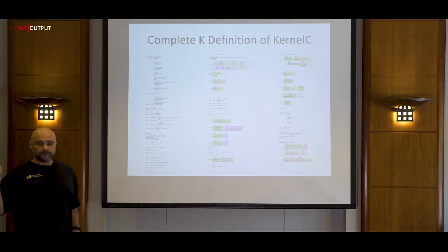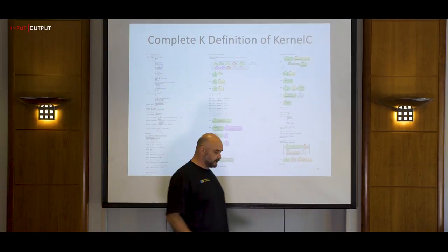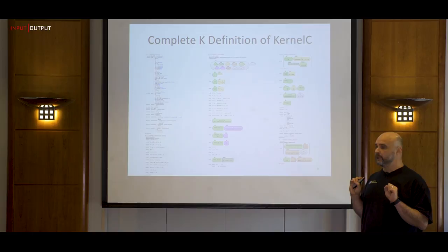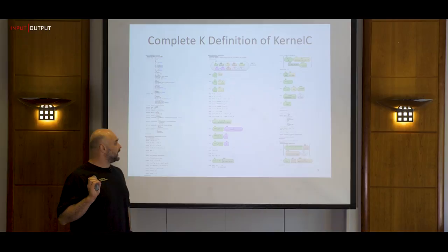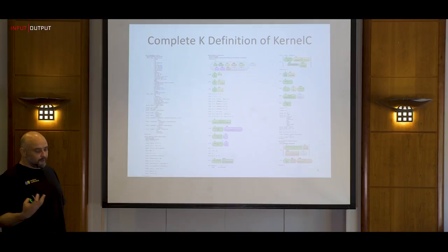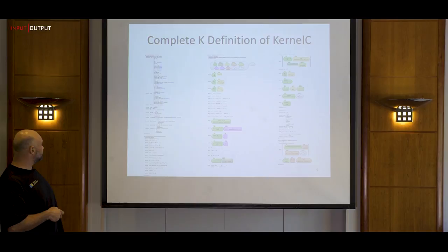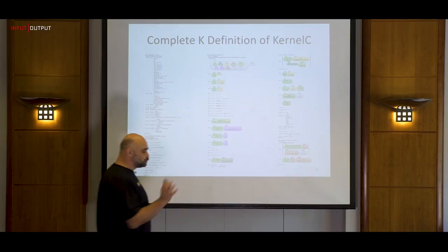Let me give you a flavor of how K works. This is a very simple language — a fragment of C called Kernel C — and this is the entire complete definition, called the language poster, generated by one of the tools in the K framework from the textual semantics of the language. On the left we have the syntax and macros, and on the other two columns we have the semantics. I'm going to zoom into important parts of the definition.